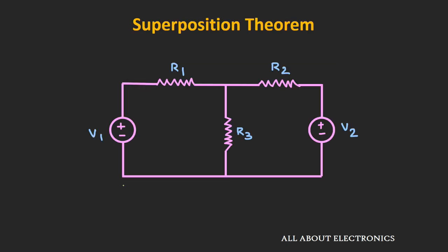We will understand this superposition theorem by taking one example. As you can see here, we have a total of two independent voltage sources, and let's say we want to find the current I that is flowing through this resistor R1. Using the superposition theorem, we can consider one particular independent voltage source at a time and find the current flowing through resistor R1.